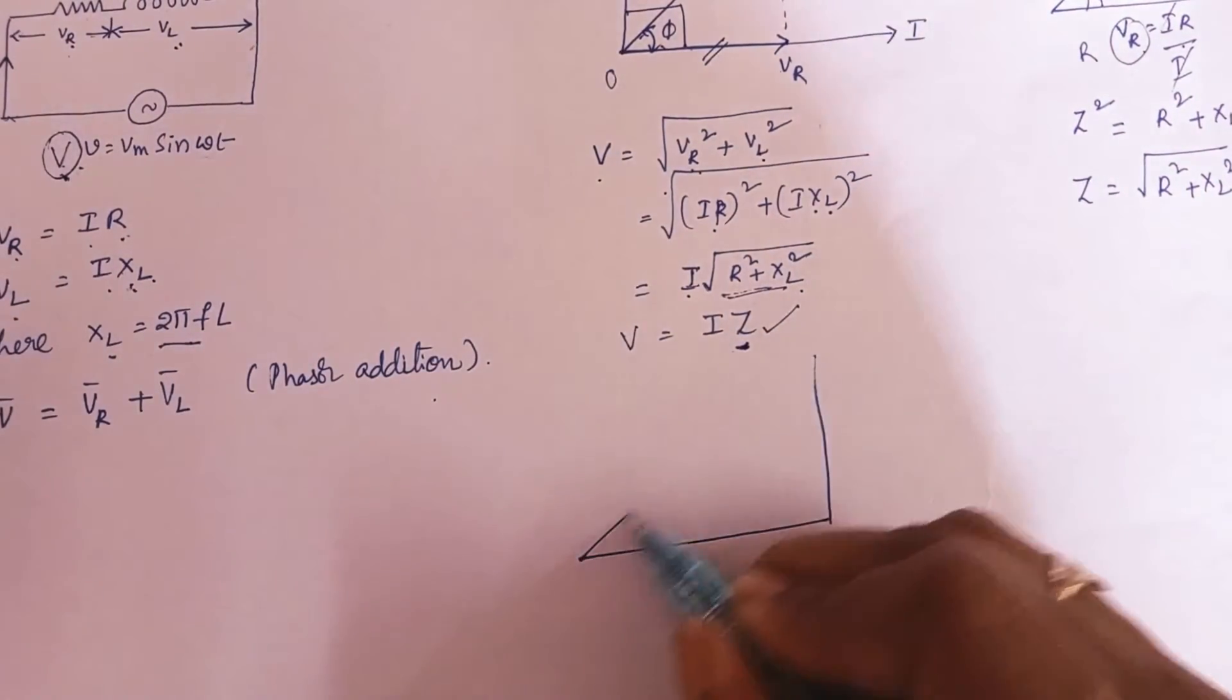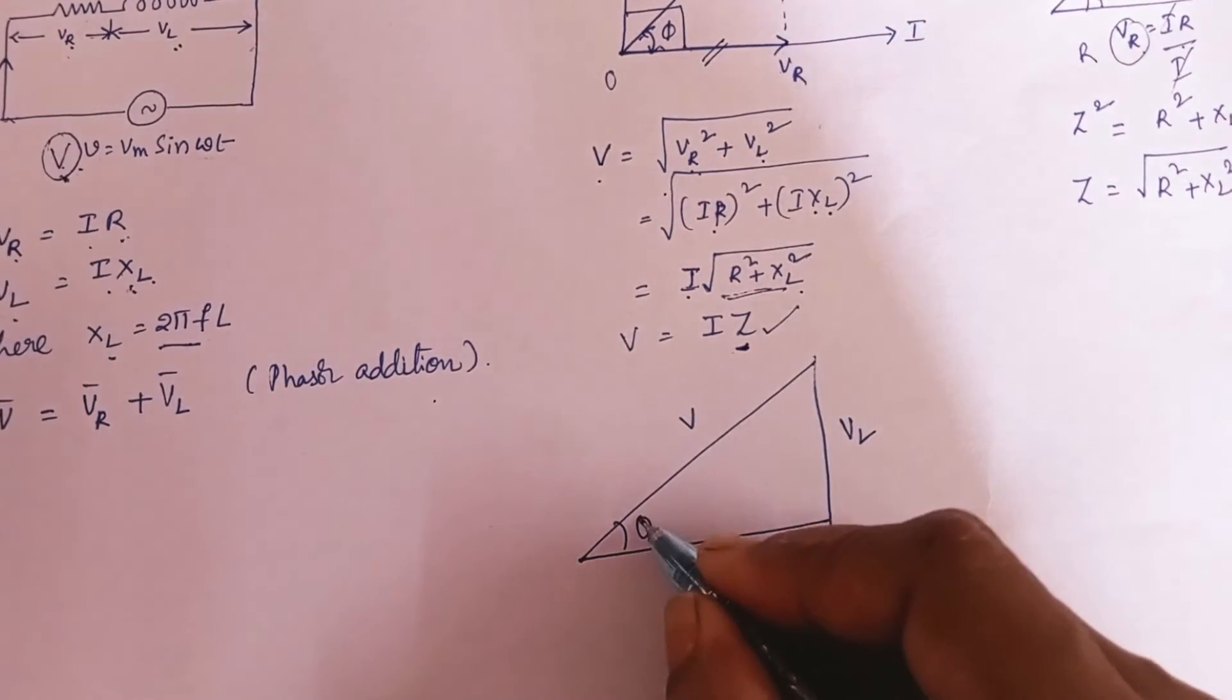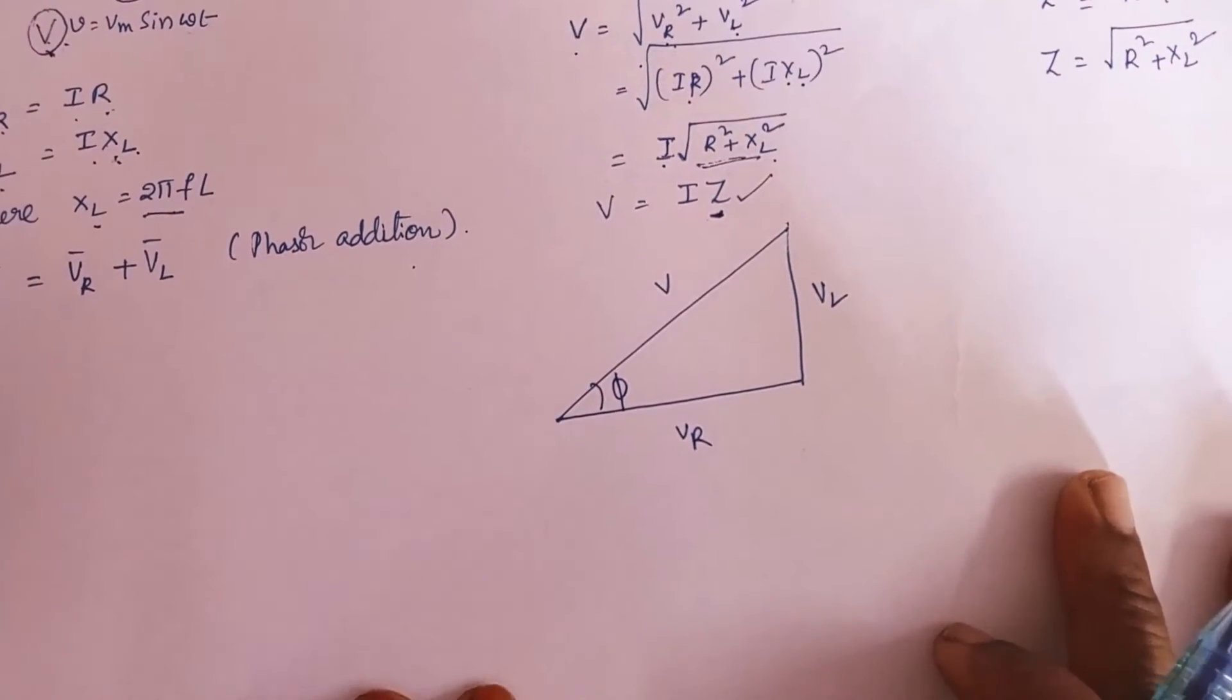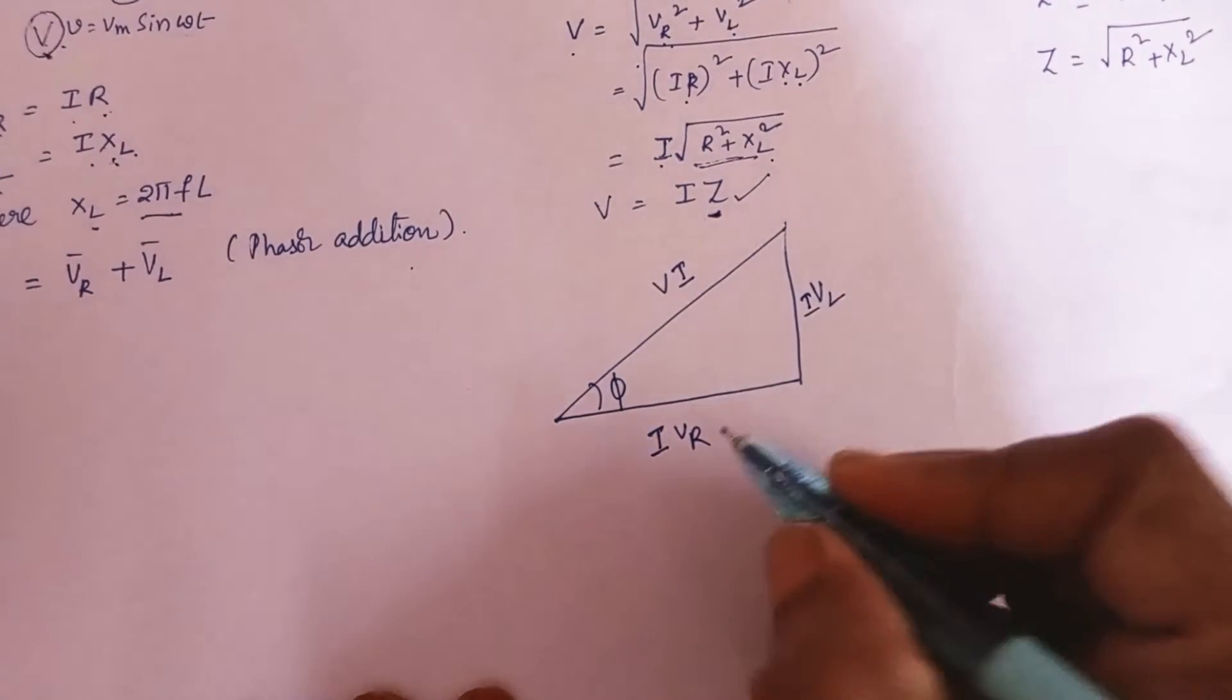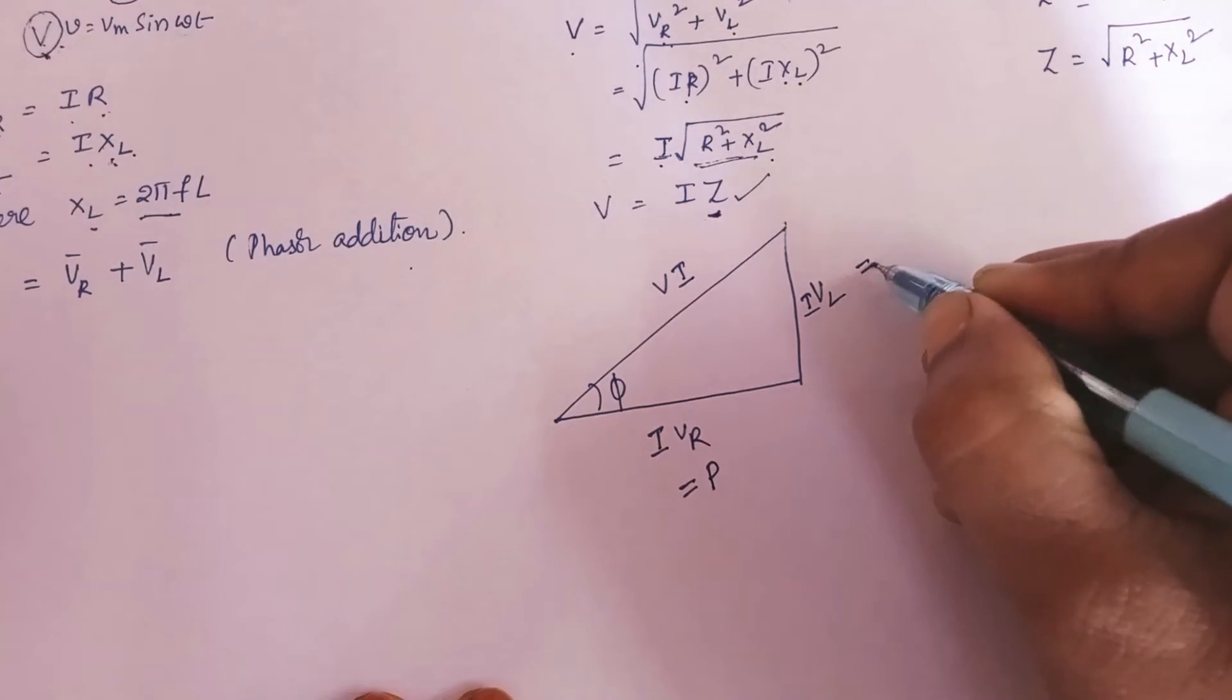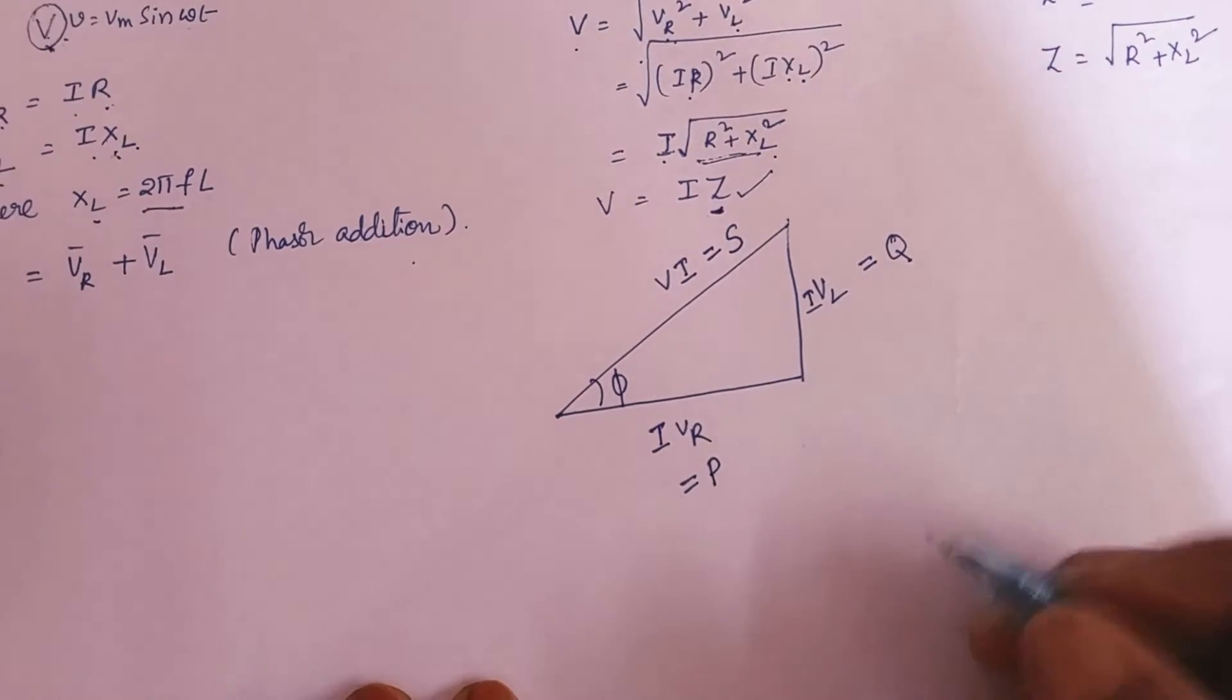This is your Vr, this is your Vl and this is your V making an angle of phi. So now multiply this voltage triangle with current I. So this power will be called as a real power. This power will be called as a reactive power. And this power will be called as the apparent power.